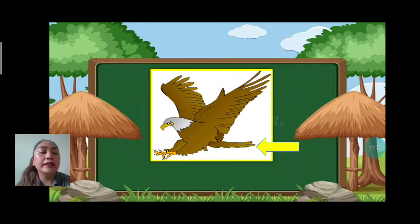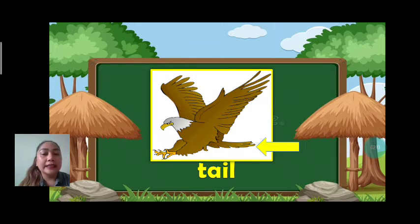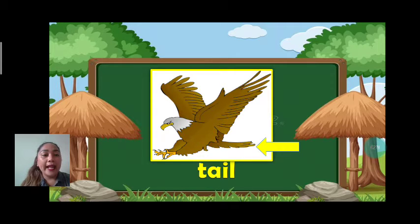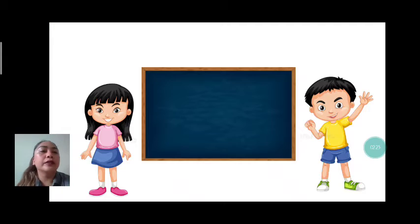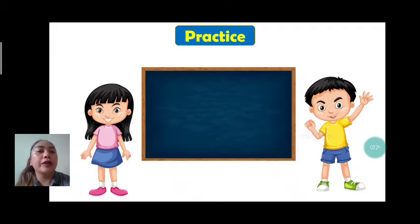Next, we have tail. Let's spell: T-A-I-L. Tail. Again, what part of the bird is it? It's a tail. Great job.